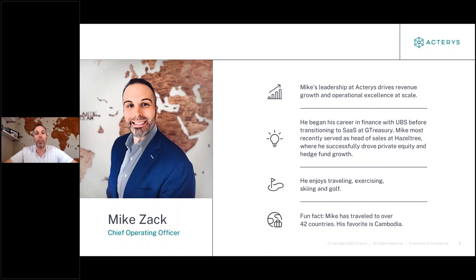My name is Mike Zach. I am the Chief Operating Officer for Acteris. Acteris is a planning or XP&A platform that allows users and organizations to centralize all of their data in a single source of truth, all wrapped around the Microsoft ecosystem. The planning engine is extremely robust, providing flexibility such as top-down planning, bottom-up planning. We service multiple industries as well as hundreds of organizations worldwide. I started at a company called G-Treasury, which was a treasury management solution, and then moved over to Hazeltree, which was a treasury management application for hedge funds and private equity firms.